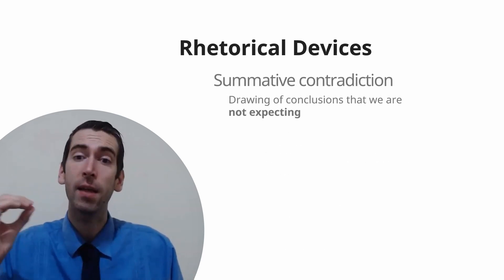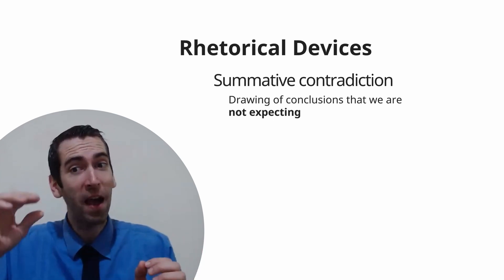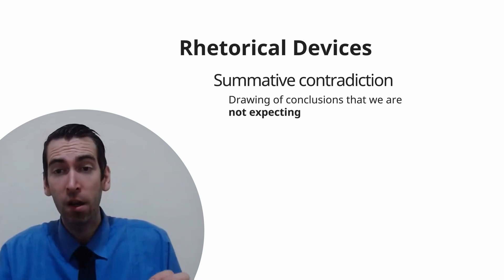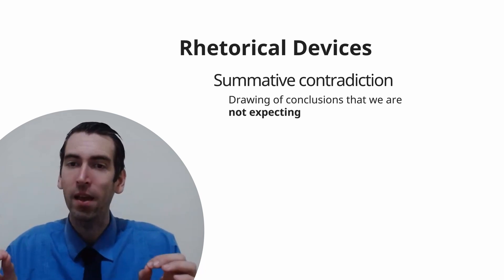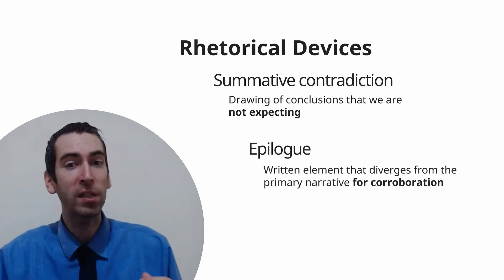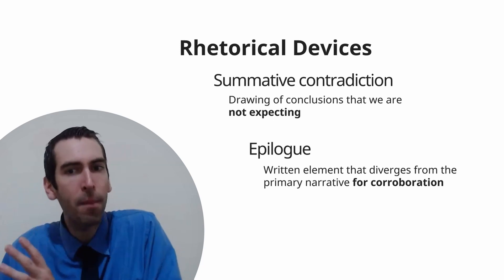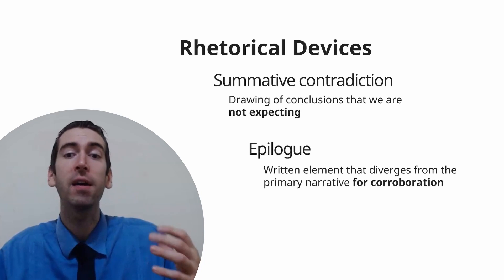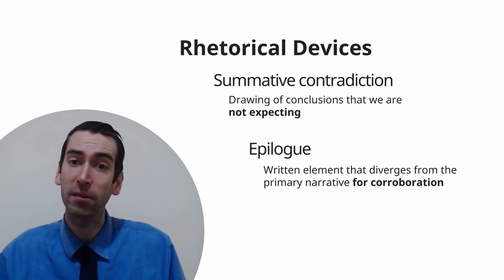Next, we can consider summative contradiction. This is where the conclusion of an author will hinge on the fact that it wasn't supposed to be true, but in fact it is. Authors love to draw conclusions that readers weren't expecting. How about epilogue? This is a written element that diverges from the primary narrative to solidify some aspect of that narrative. CARS passages sometimes need their final paragraph to somewhat unnaturally resolve tensions introduced by the passage itself.